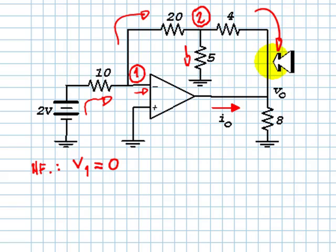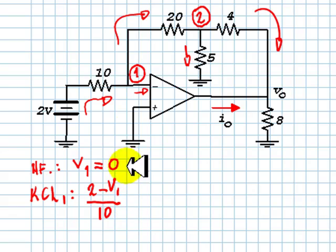And let's write KCL for node 1. Currents that go in: 2 minus V1 over 10, equal to this current, which is zero amps, because this is an ideal amplifier. Zero plus the current on the top, which is V1 minus V2 over 20.